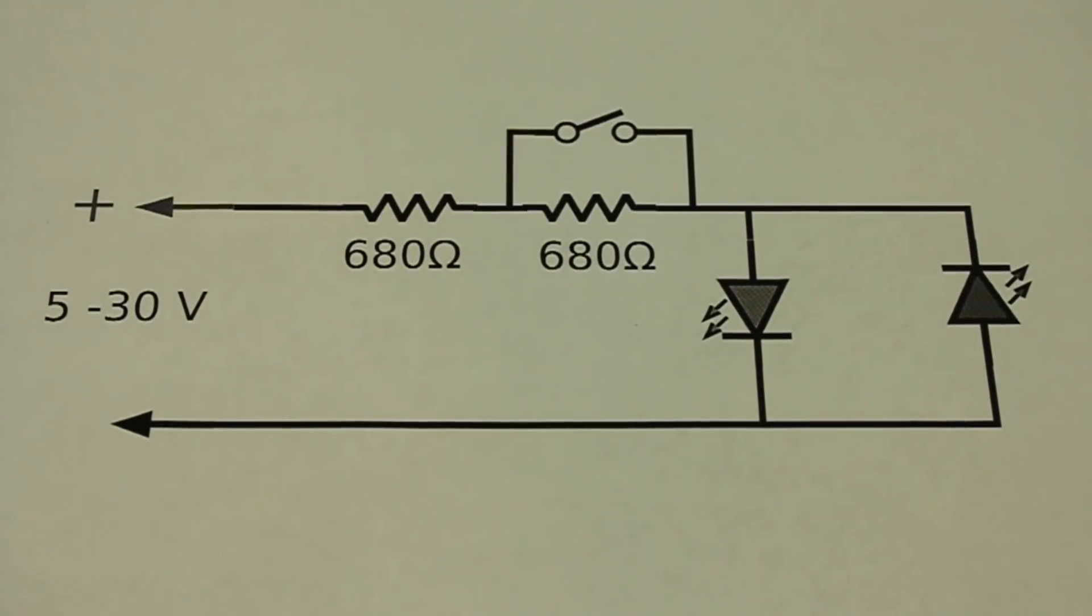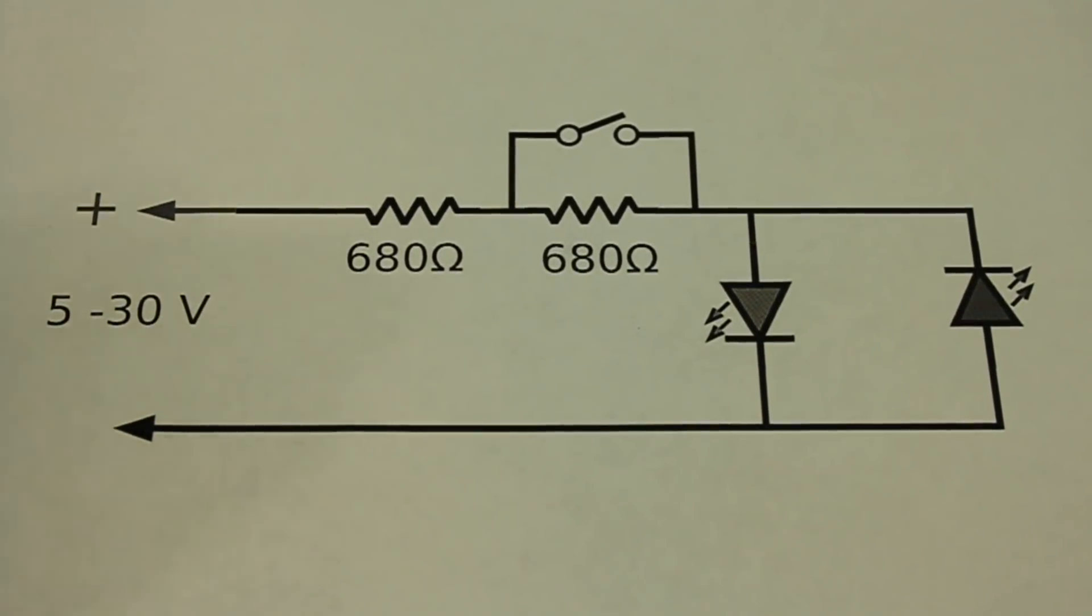If we connect our battery with the positive here and the negative here then the left LED is correctly polarized and will turn on but the LED at the right will remain off. On the contrary if we connect negative here and positive here the right LED will turn on and the left one will remain off.